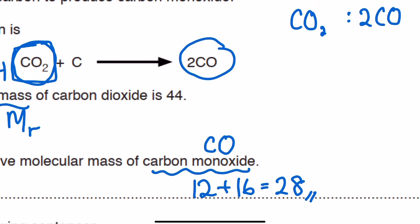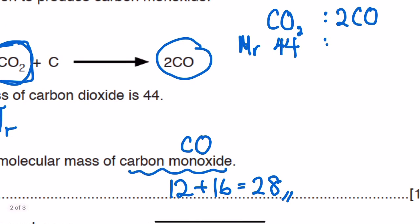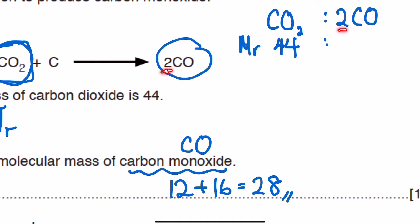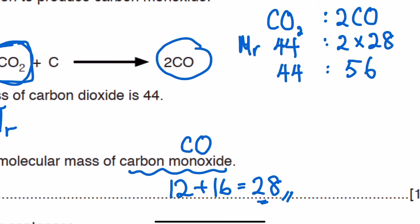In the next row, write the Mr values. The Mr for CO₂ is 44. For carbon monoxide, the Mr is 28 for one molecule, but since the equation shows 2CO, you multiply by 2: 2 times 28 equals 56.